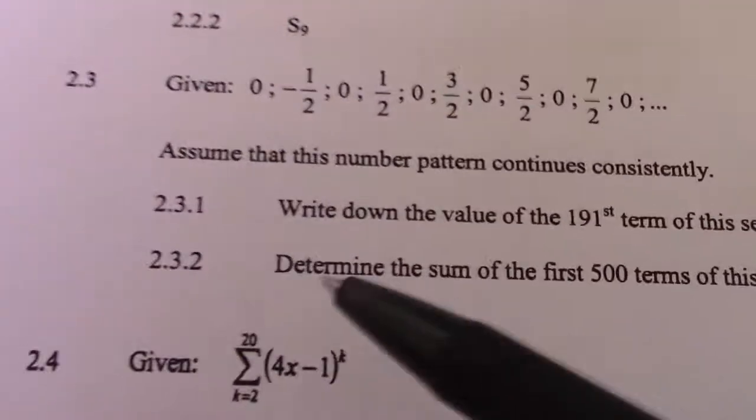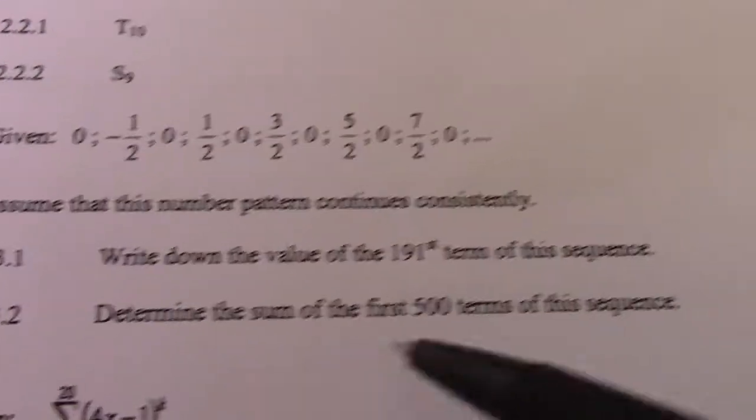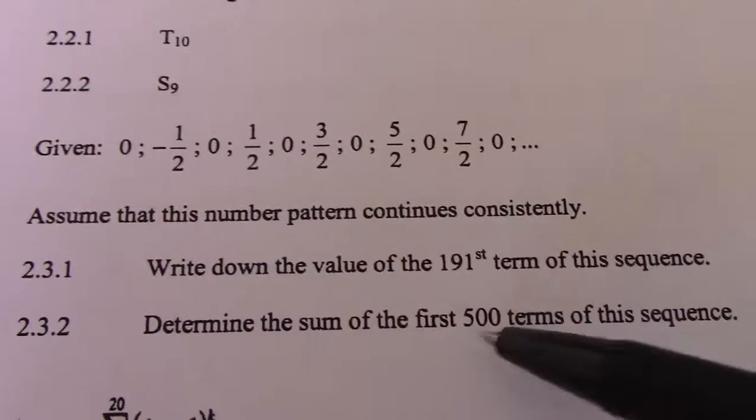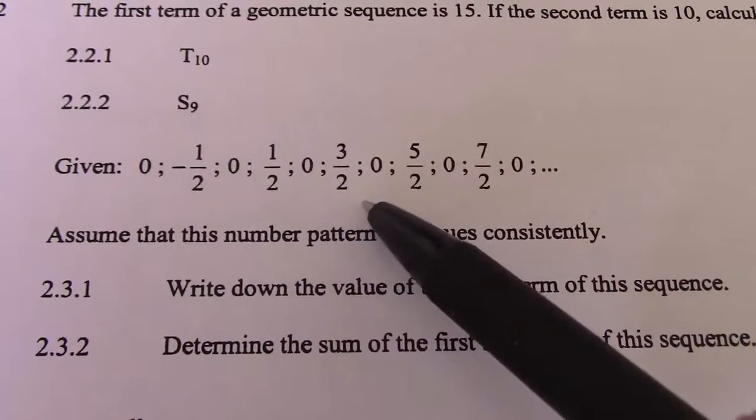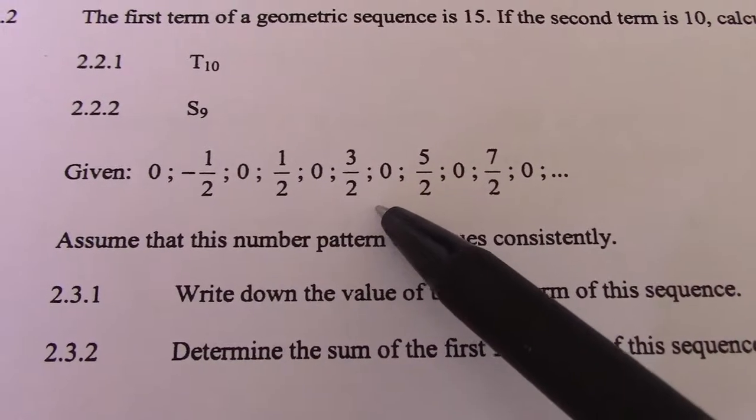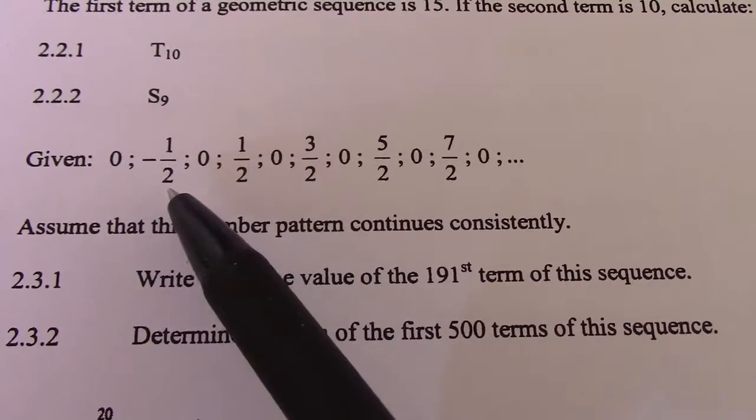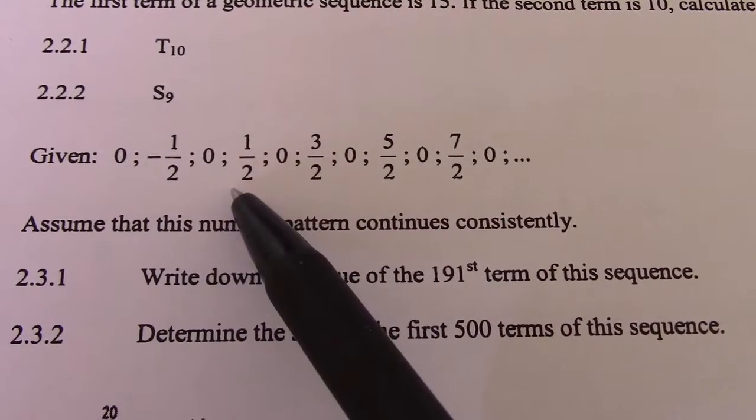All right, 2.3.2 determines the sum of the first 500 terms of the sequence. So 250 of those are 0, I hope you follow. All right, and the other 250 is part of the sequence where a is minus half and d equals 1.